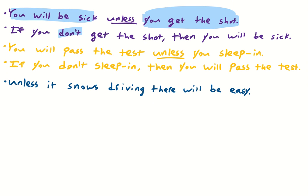Here's another example. Unless it snows, driving there will be easy. What would that be in our propositional logic as we translate it into a conditional? It would be, if it doesn't snow, then driving there will be easy.